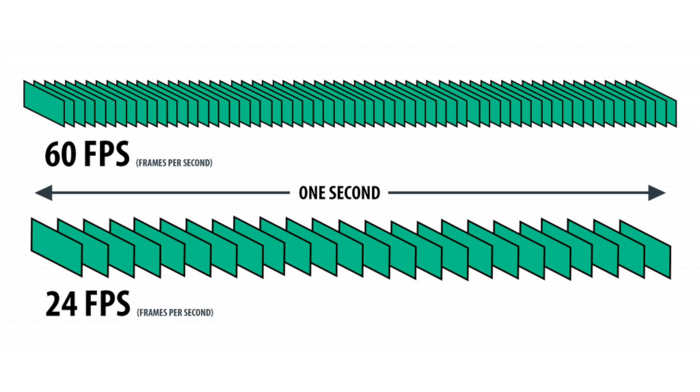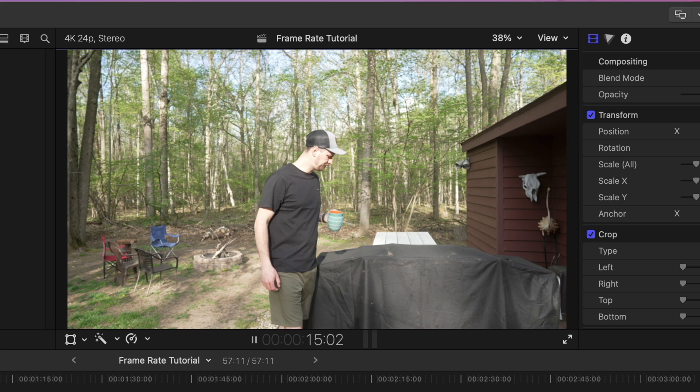To quickly break down frames per second: it simply means that when you're shooting in 24 frames per second, your camera is taking 24 images in one second. If you're shooting in 60 frames per second, your camera is taking 60 photos in one second to give you that movie effect. It's similar to one of those animated flipbooks that you can flip through and it looks like the animation is moving. Now I'm going to start a project in Final Cut in a 24p timeline, bring in different clips, and explain as I go to show you how everything looks.